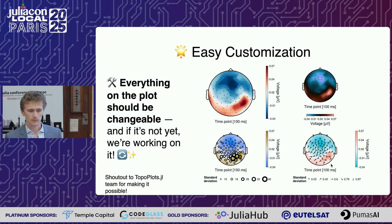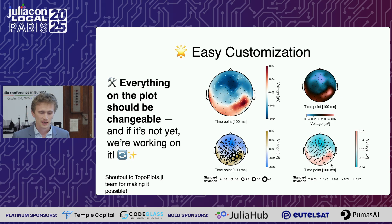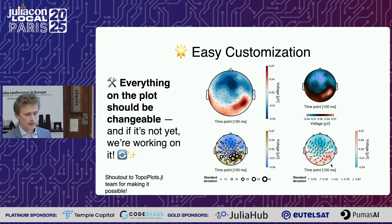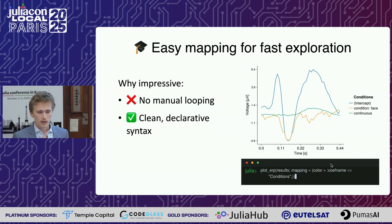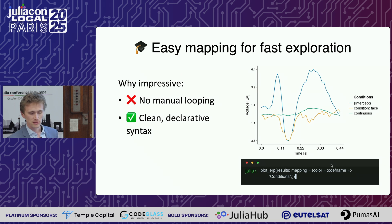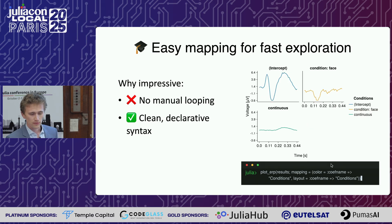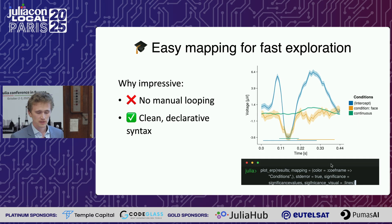Here you can see how customizable it is right now. Our motto is to make everything on the plot tangible, and if it's not yet, we work on it. You can see how, for instance, a TopoPlot can be changed depending on the task. A shout out to the people who developed TopoPlots.GL, which makes this possible. Another part of customization is that it should be easily explorable. Algebra of Graphics helps us a lot here — by changing the parameter mapping, we can change a lot on the figure. Data can be mapped by rows, columns, facets, line types, and we can add significance values, etc.